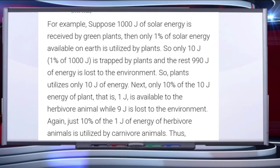To understand this with an example: suppose 1000 joules of solar energy is received by green plants. Only 1 percent of solar energy available on Earth is utilized by plants, so only 10 joules — that is 1 percent of 1000 joules — is trapped by plants, and the remaining 990 joules of energy is lost to the environment.